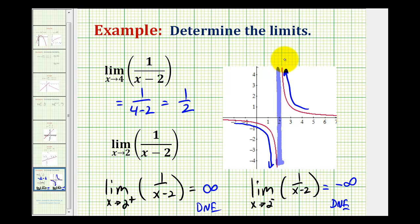So here's our limit that's approaching positive infinity, and here's our limit that's approaching negative infinity. Which means the limit as x approaches two of one divided by x minus two, of course, doesn't exist.